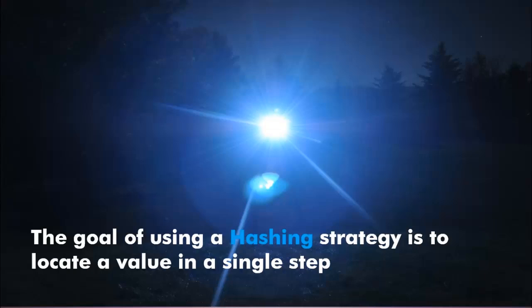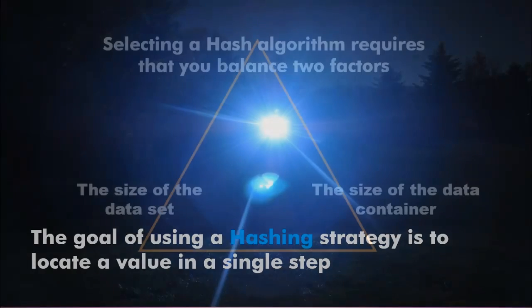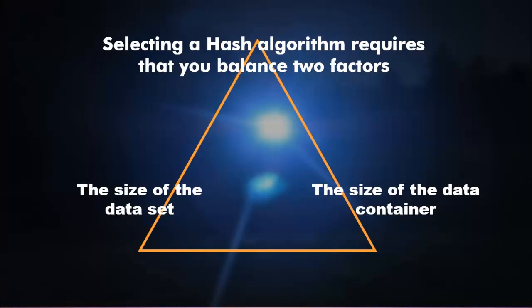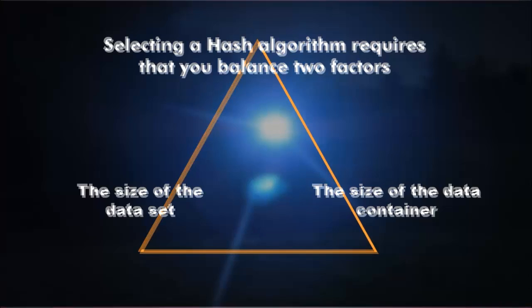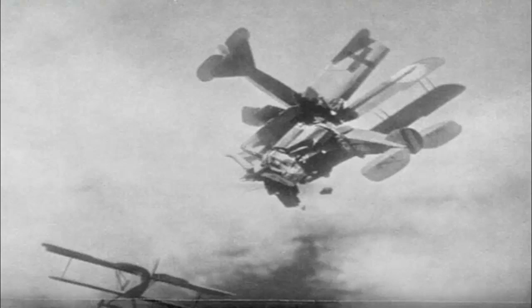We locate data in a single step by following a formula. The same formula that we use to place the data into the list is the formula that we use to locate the data item in the list. When thinking about what type of hashing algorithm to choose, we have to balance two factors: the size of the data set and the size of the container. One advantage of hashing is that it allows us to use a smaller data container to hold a given number of data elements, placing them in a specific order. One further thing to keep in consideration is collisions — when two data items try to write themselves into the same slot in our list.